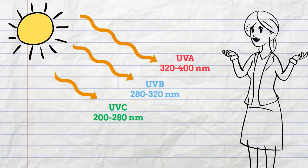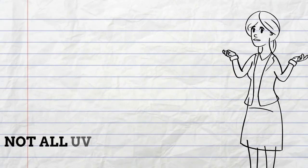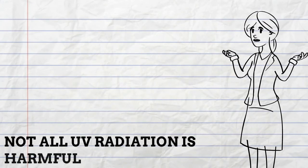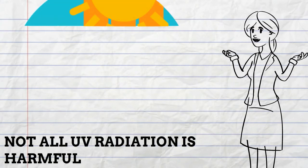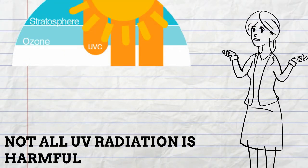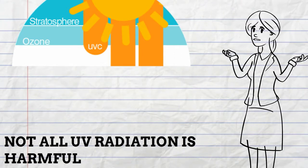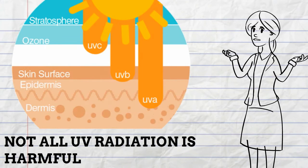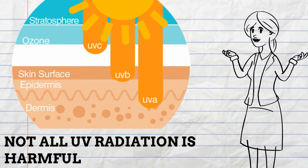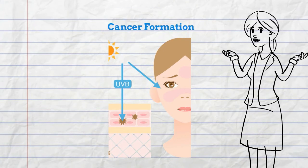It should be noted that not all types of UV radiation are harmful. UVC radiation is not a concern because it is blocked by the ozone layer from reaching the Earth's surface. However, UVA and UVB can cause damage to our skin. UVB is harmful as its wavelengths are absorbed into the skin and can lead to cancer formation.